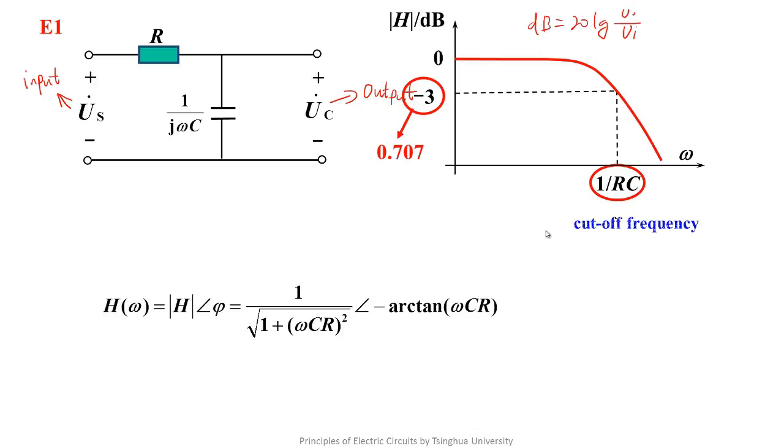Why? The minus 3 dB means that amplitude of the transfer function is 0.707. The 1 over RC is defined as a cut-off frequency or known as a half-power frequency. Here we need to review what we taught in lecture 69. We specifically introduced the 0.707 AF characteristic.